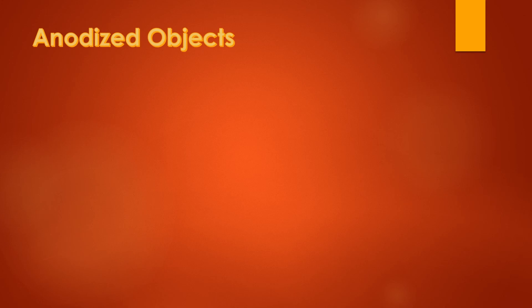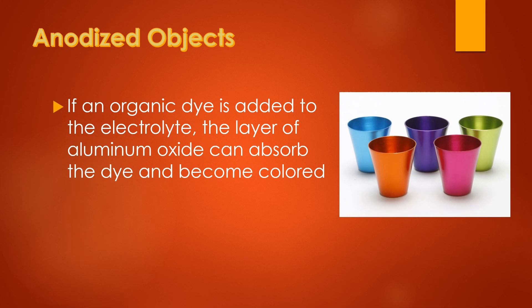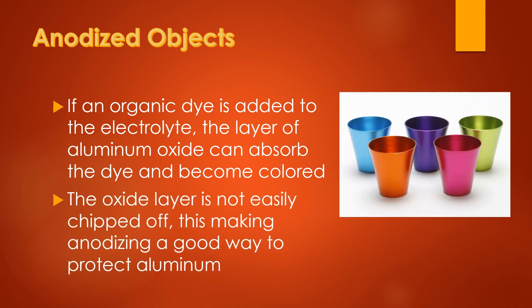Anodized objects: if an organic dye is added to the electrolyte, the layer of aluminum oxide can absorb the dye and become colored — as you can see in this photo, the anodized surface is very colorful. The oxide layer is not easily chipped off, making anodizing a good way to protect aluminum.